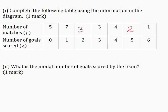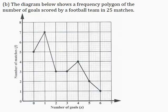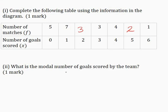Part 2: What is the modal number of goals scored by the team for one mark? Now from the frequency polygon here, the highest number of matches is 7 and in these 7 matches 1 goal was scored. So the modal number of goals scored by the team is 1 goal.